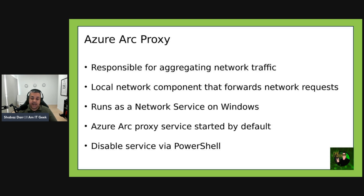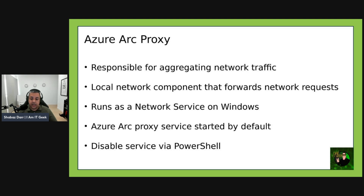With version 1.51 and later, the Arc proxy service starts by default, as it can now determine whether the machine is configured to use the Arc gateway or to communicate directly with the Arc endpoints and behave appropriately. If you're not using the Arc gateway, you can still choose to disable the Arc proxy service with the PowerShell command: `azcmagent config set connection.type direct`.